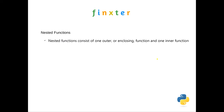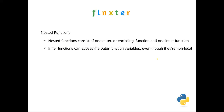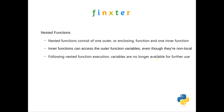On nested functions: as you'll know, nested functions consist of one outer or enclosing function wrapped around an inner or enclosed function. Inner functions are able to access the outer function's variables even though those variables are non-local to the inner function. However, once the nested function is executed, those variables are no longer available — they're only available during the execution of the function. We'll show you this in the code.